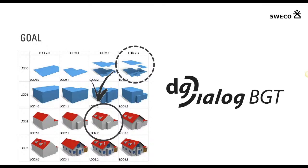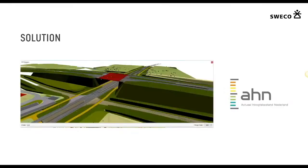Because it's not about making nice images — it's about generating correct and complete data. Our first solution was to use the AHN, the height map of the Netherlands, to enrich the data we already had.